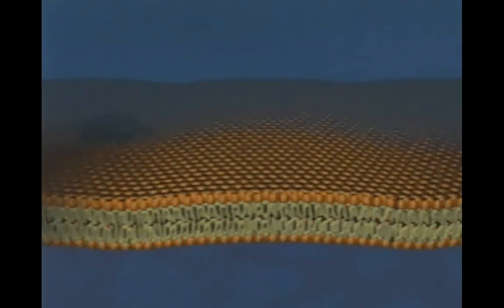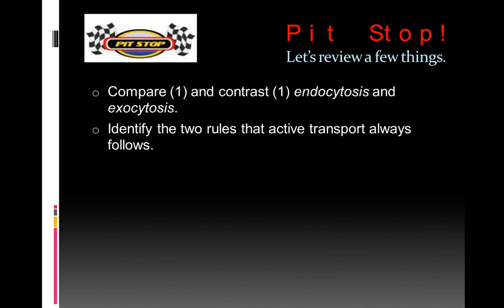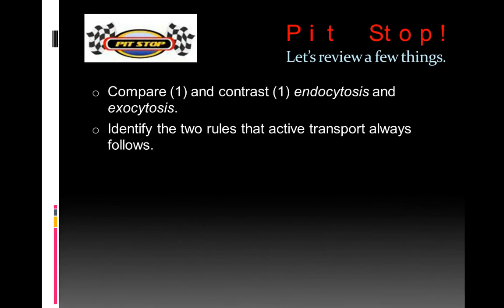Cells also use energy to transfer materials in bulk, but this time by forming membranous sacs that hold their contents under wraps. In a process called endocytosis, part of the surface membrane encloses the material, forming a sac which brings the contents into the cell's interior. In the opposite process, called exocytosis, the sac moves through the cytoplasm to the membrane, fuses with it, then releases the contents. So quick stop. Compare and contrast endocytosis and exocytosis. And then identify the two rules that active transport always follows.